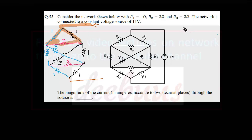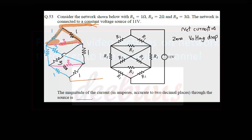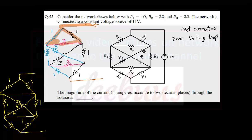Since the net current through the 2 ohm is zero, there is no voltage drop across it. Zero voltage drop means we can short-circuit the 2 ohm. The same argument applies to the other 2 ohm by symmetry. So we replace both R2 resistors with short circuits and redraw the equivalent circuit.